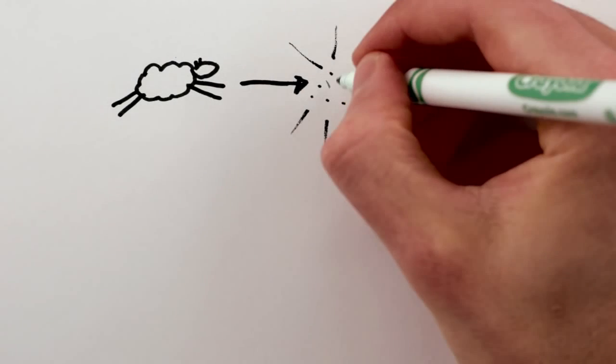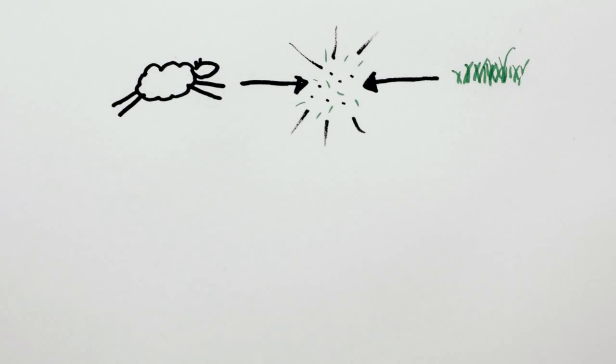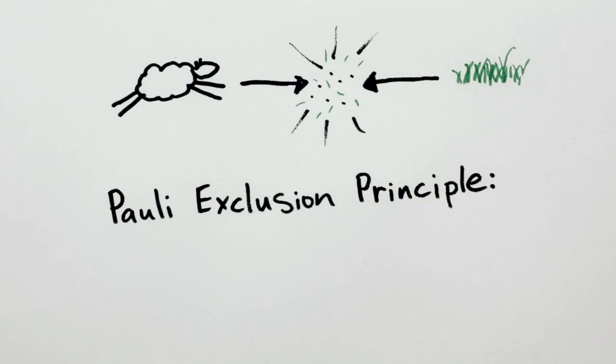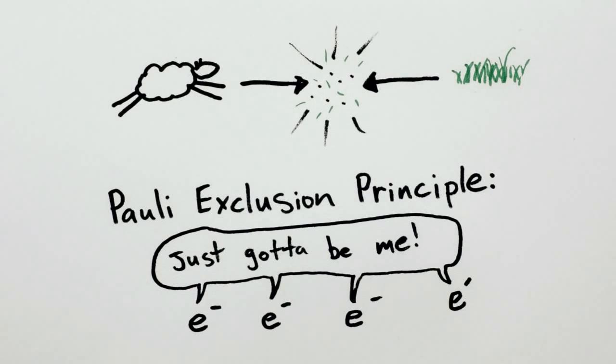The most basic particle physics definition of matter comes down to one surprising rule, the Pauli Exclusion Principle. Or, essentially, electrons hate being alike.